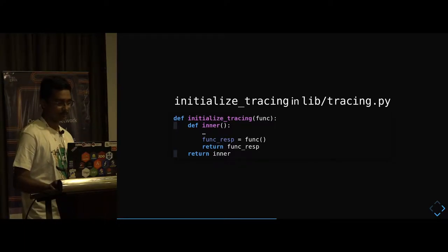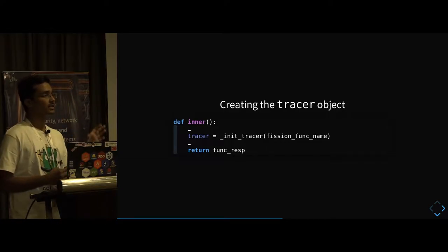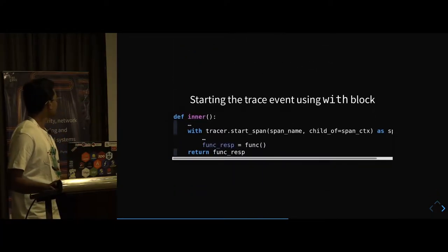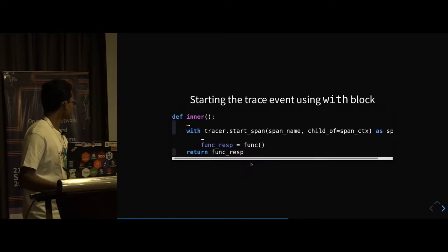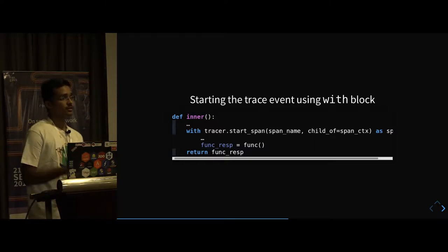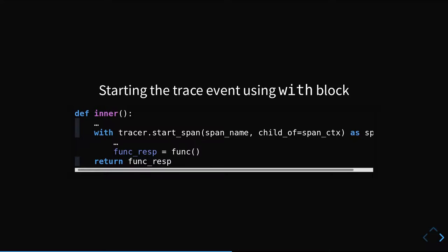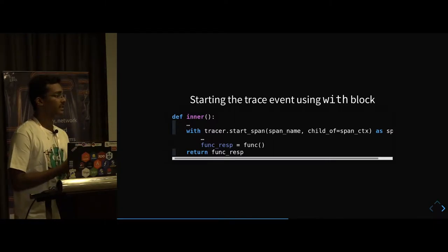Let us dive into the first step. We create a tracer object, which helps us create the tracing events we call spans. We save this tracer in a variable and the next step is to start the event. Our tracing event is created by calling tracer.start_span. It is inside a with block, and whenever that with block ends the span will be closed. There are two events — the start of your function call and the end of your function call — and this will be recorded as one span. When starting the span we specify one name, which in our case will just be the function name — either greeter or image.